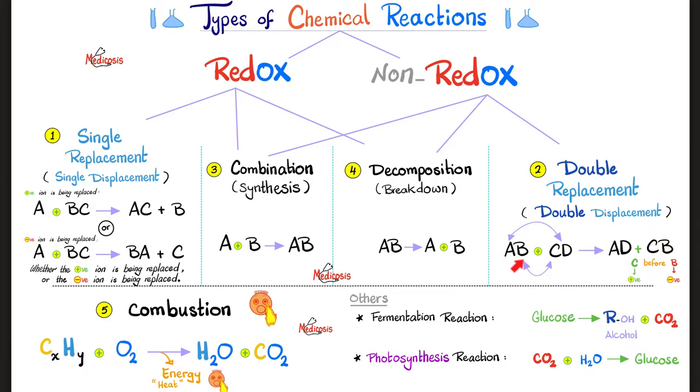How about double replacement or double displacement? AB plus CD yields AD plus CB. But why didn't you write the B before the C? For the same reason. C was written first, which means C is the positive ion. So I write C first. B was written later, which means it's the negative ion. So I put it after C. Always start with the positive followed by the negative.